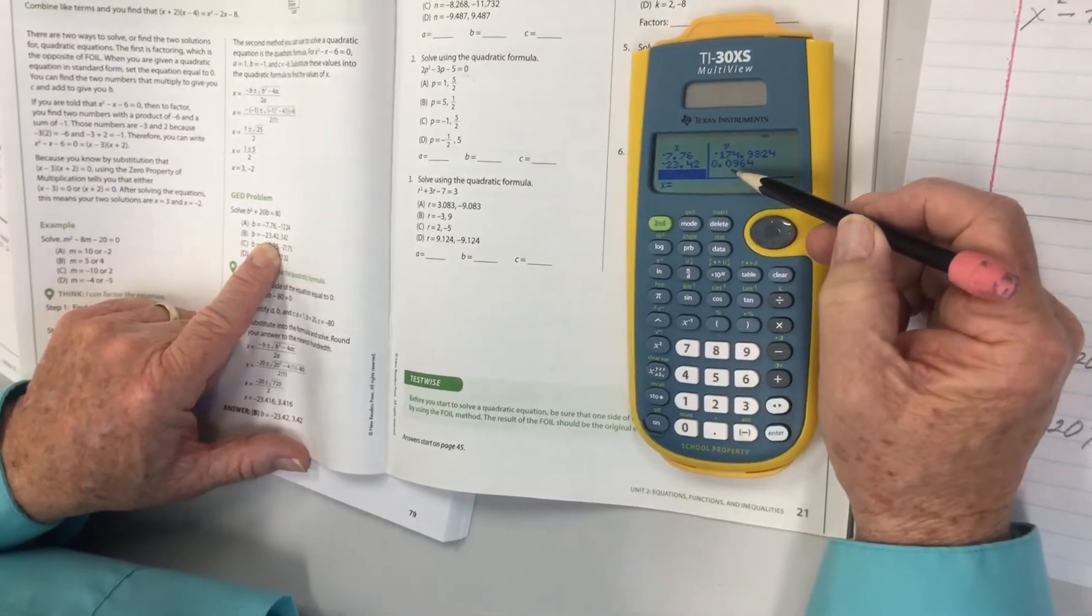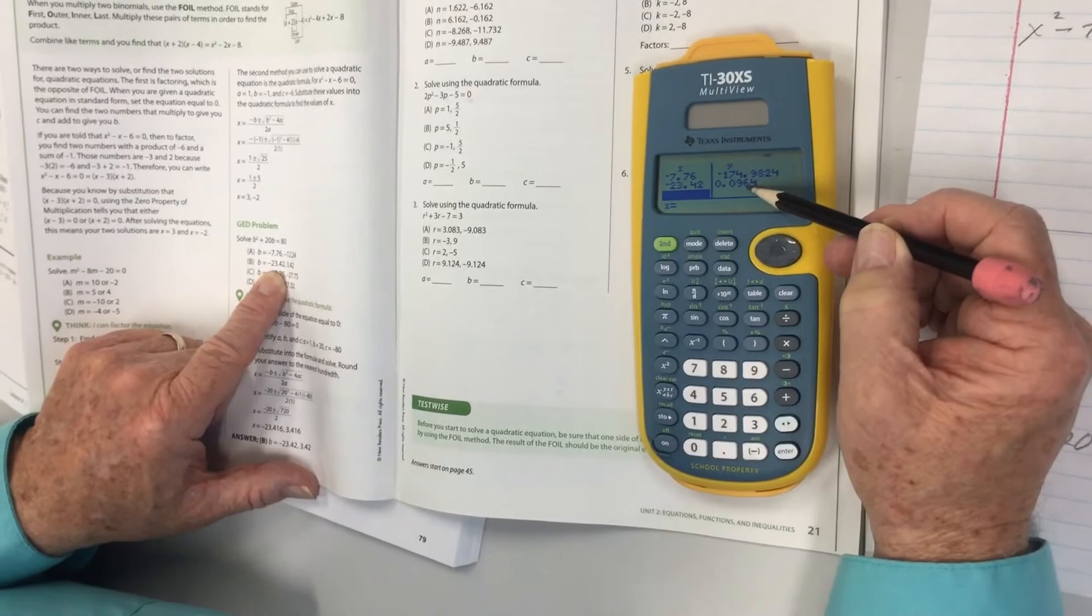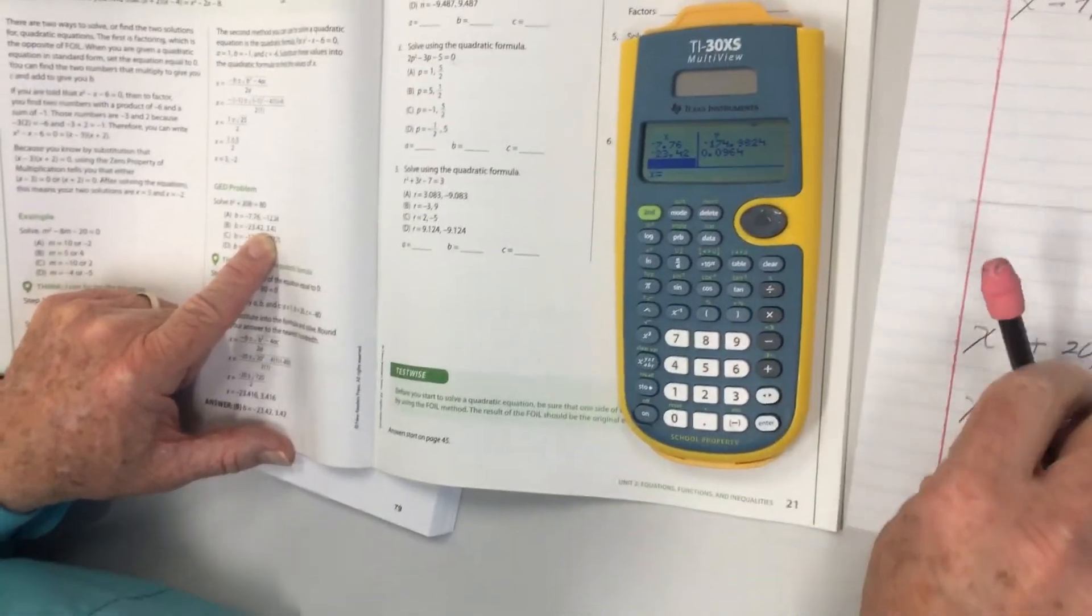Let's go ahead and try the 3.42. 3.42, enter, and that gives another number pretty small. It's pretty close to zero, but let's try these others to make sure that we're not there.